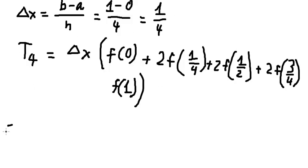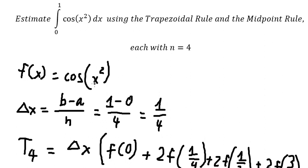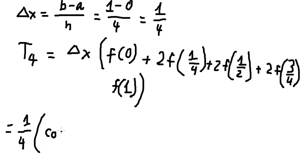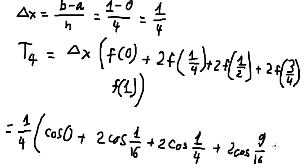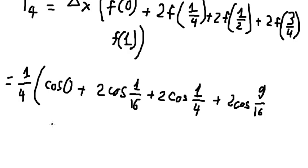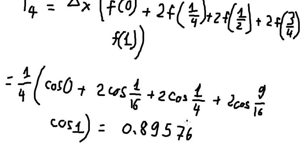Now we put all the numbers together. For f of zero, we put zero in and we have cosine of zero. The next one, we put 1 over 4 in and that is cosine of 1 over 16. The next one we have cosine of 1 over 4, then cosine of 9 over 16, and the last one is cosine of number 1. So we sum all the numbers together and you get the result like this.